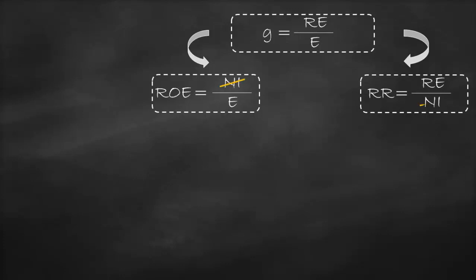Net income will offset net income, so we will end up with the original formula of the sustainable growth rate of retained earnings divided by the book value of equity.